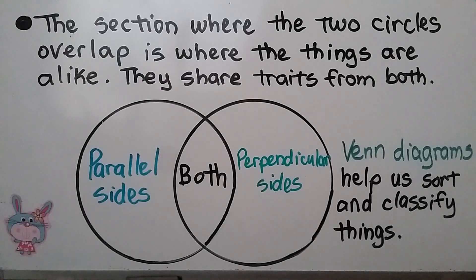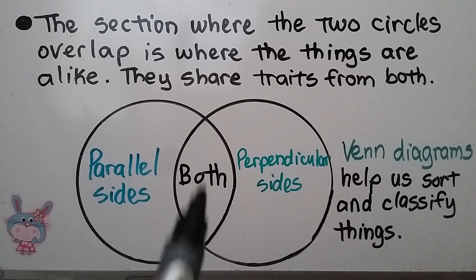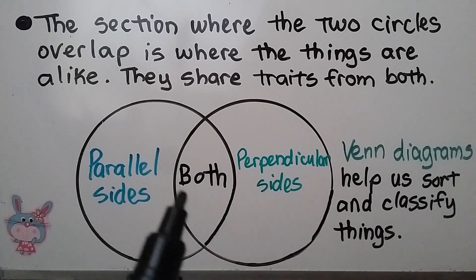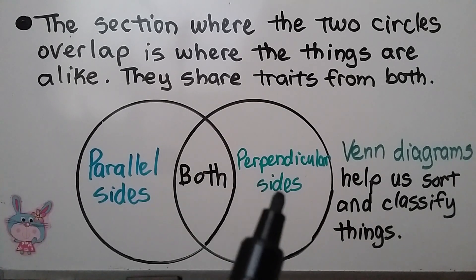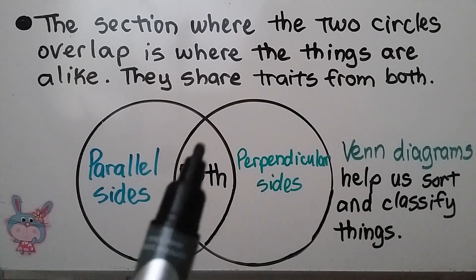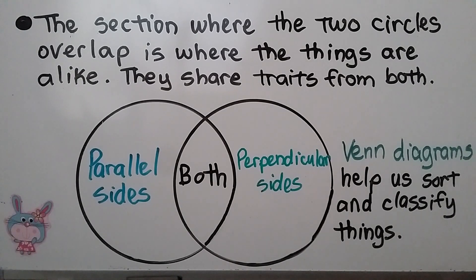The section where the two circles overlap is where things are alike — where something has both parallel sides and perpendicular sides. They share traits from both. And Venn Diagrams help us sort and classify things.